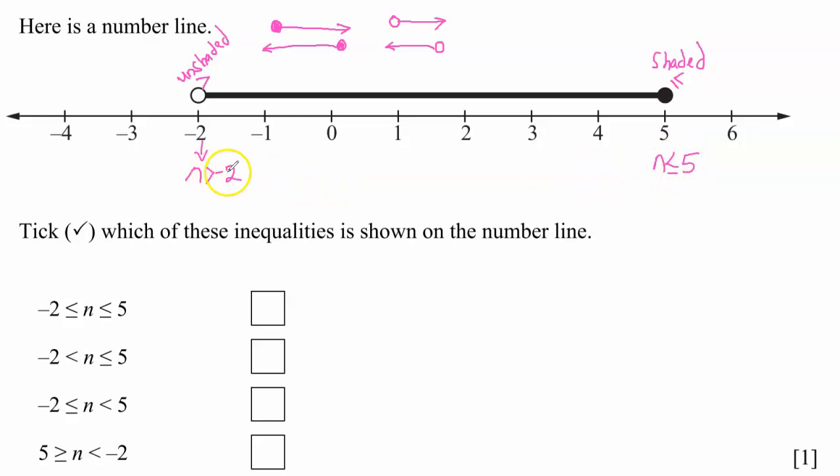So what we have to do now is to combine these inequalities, these two inequalities, n greater than negative two and n less than five. So this is the analogy I'm going to use. We all know that two is less than three.